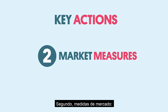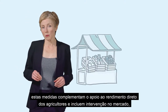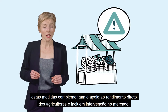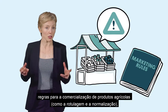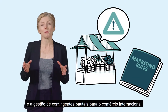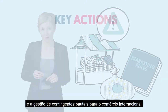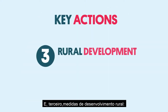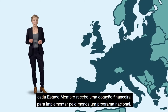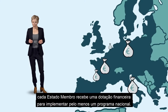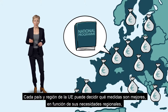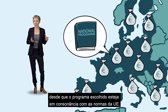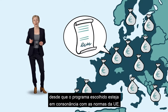Secondly, market measures. These complement the direct income support for farmers and include market intervention, a provision of sector-specific support, rules on the marketing of agricultural products such as labelling and standards, and the managing of tariff quotas for international trade. And thirdly, rural development measures. Each member state receives a financial allocation to implement at least one national programme, and each EU country and region can decide which measures are best based on their regional needs, under the condition that the chosen programme falls in line with EU standards.